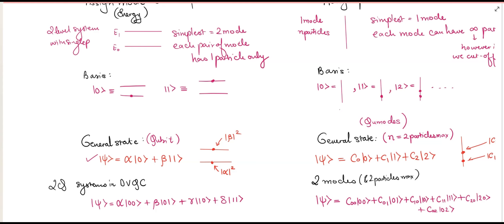If we have two such quantum systems in the Hilbert space, the general state is written as ψ = α|00⟩ + β|01⟩ + γ|10⟩ + δ|11⟩, where |00⟩, |01⟩, |10⟩, |11⟩ form the basis of the two two-level quantum systems. Similarly, for two modes in the Fock space with a maximum capacity of two particles, the general state includes terms like c₁₁|11⟩, where |c₁₁|² gives the probability of finding one particle in mode k1 and one particle in mode k2.